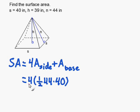So I need to multiply it times four, remember, because there's four equal triangles. Now I'm going to add the base which is 40 times 40 because the base is a square. So that's just side times side.